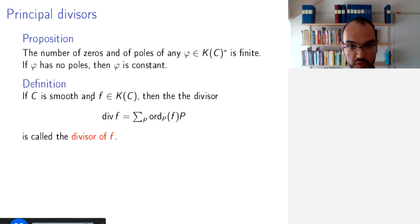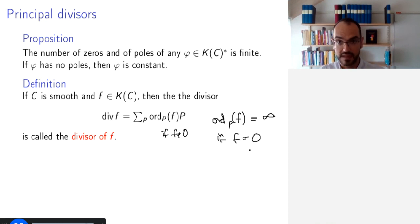And so, now assume that the curve C is smooth, and take a rational function on C, then we define the following divisor. So, remember, a divisor is a formal sum of points. And now, as the order, we take the order of the function at that point. So, this works if f is not zero, not identically zero. And we define the order at P of f to be infinity if f is identically zero.